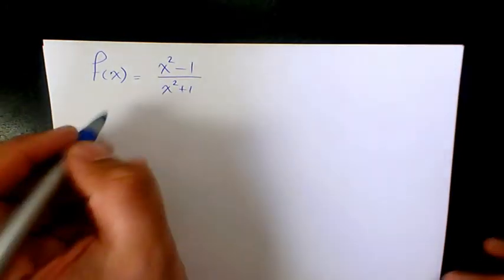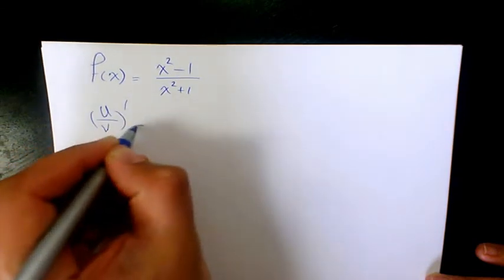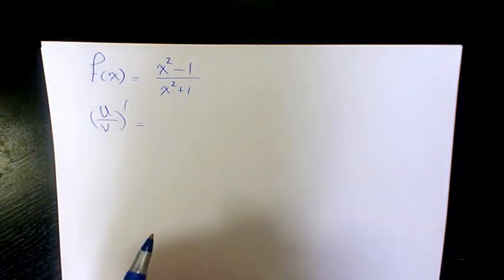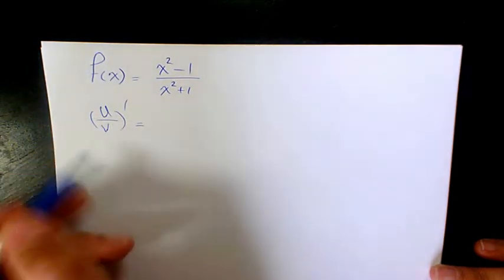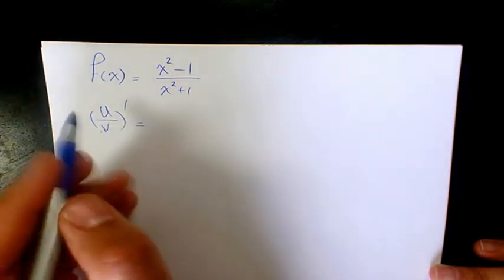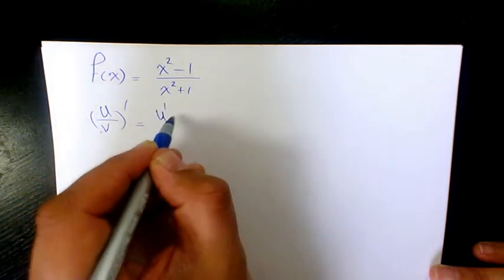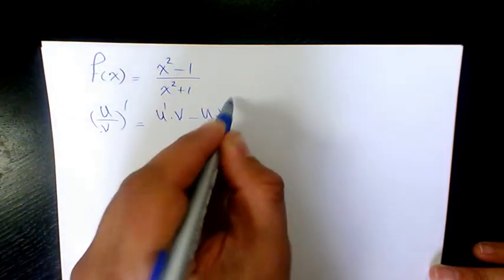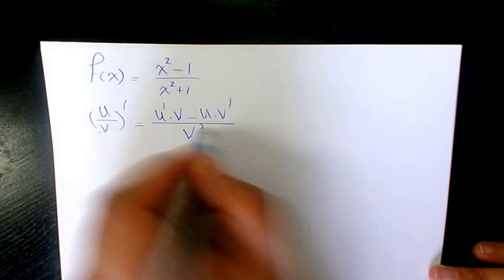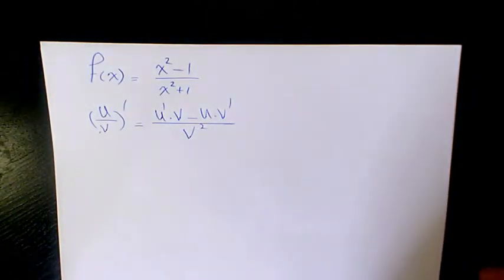The first thing I'm going to do — we are dealing with a rational function. And when we are dealing with a rational function, we need to use the quotient rule. The quotient rule says that when we have u over v and we want to find the derivative, it's going to be u prime times v minus u times v prime divided by v squared. That's how you find the derivative of this expression.